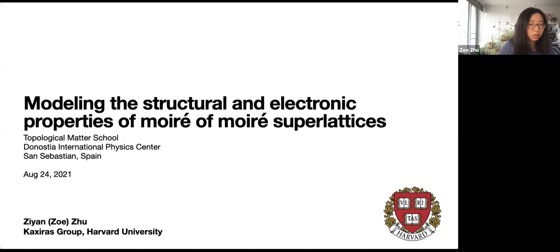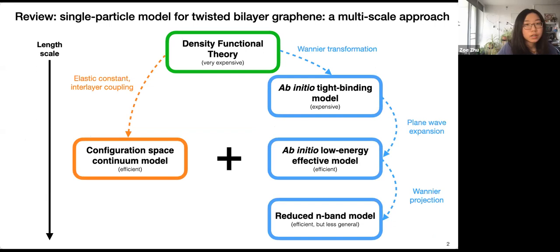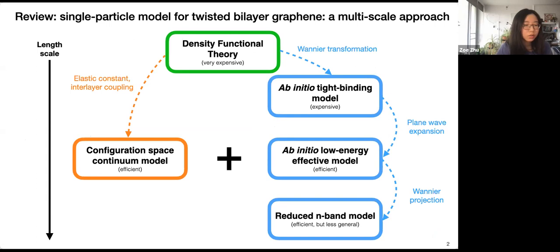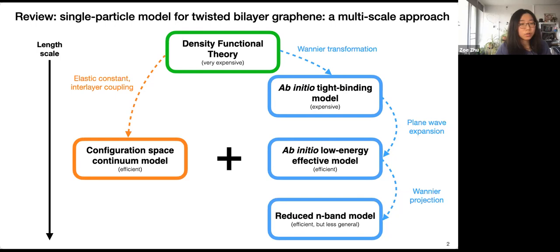As a quick review of yesterday's talk by Professor Katshiras: he introduced a single particle model for twisted bilayer graphene, a framework developed by our group using a multi-scale approach. All of our calculations are based on density functional theory; we use DFT to extract parameters for our more simplified models. Running DFT itself is not practical because all twisted systems have a really large system size and aperiodic landscape.